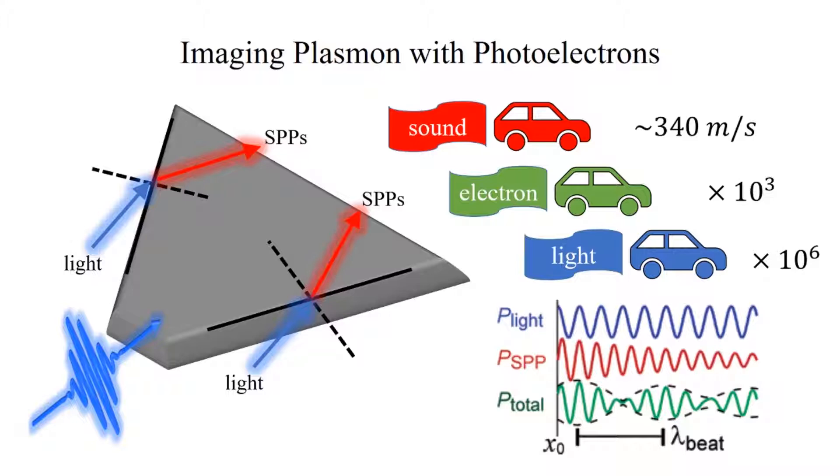Instead, we detect an interference pattern between the surface plasmon polariton and the light that excited it, which forms a static grating pattern of enhanced and depressed fields on the surface. Where the field is enhanced, the absorption of light to excite photoelectrons will be favored, and where the field is depressed, such excitation will be suppressed.